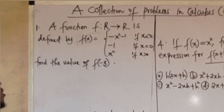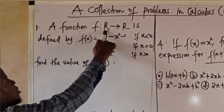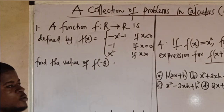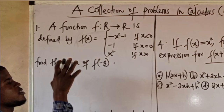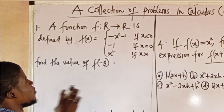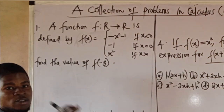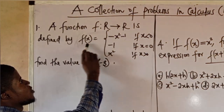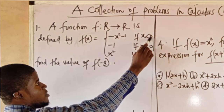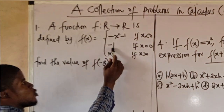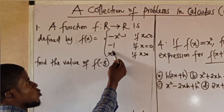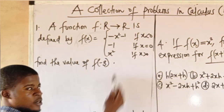The first question here is: a function f from ℝ to ℝ is defined by f(x) equal to this. This is actually a piecewise function — a function made up of three pieces. f(x) is equal to −x² − 1 if x is less than zero, it is equal to −1 if x is equal to zero, and it is equal to x² if x is greater than zero.